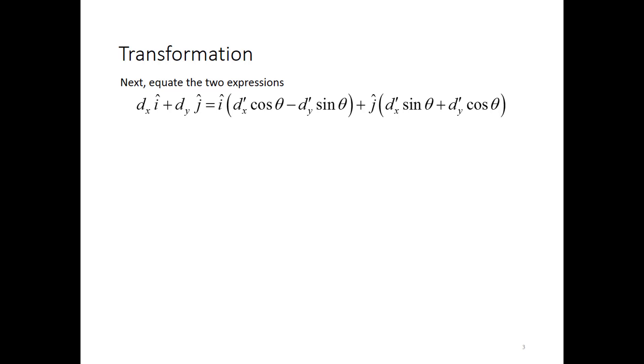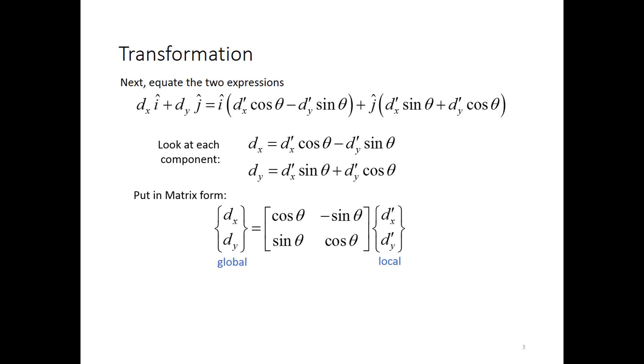So here's that expression equated. This is D equals D written in the global coordinate unit vectors. I'm going to look at each component separately so I get a definition of dx in terms of dx prime and dy prime, and a definition of dy in terms of dx prime and dy prime. I can write this expression in matrix form where I have a global degree of freedom vector equal to a transformation matrix multiplied by a local degree of freedom vector.